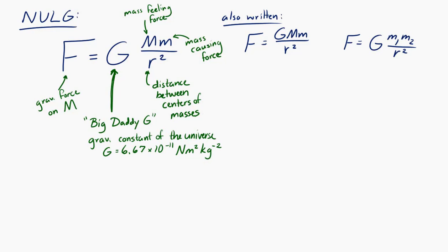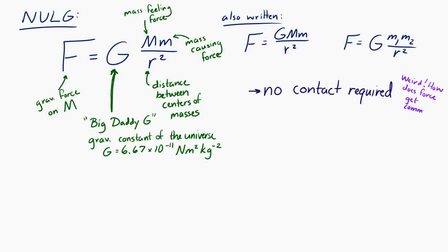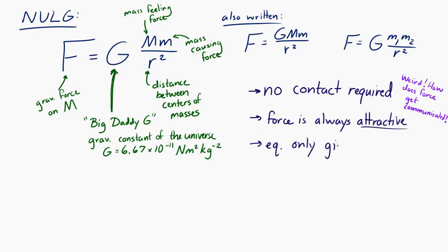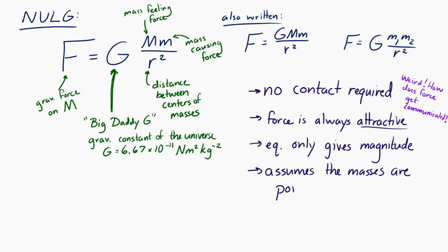One strange thing about Newton's law of universal gravitation is there's no contact required for a gravitational force to occur. Two things that don't touch can still have a force between them — so how does the force get communicated? The force is always attractive; keep that in mind. This equation only tells you the magnitude of the force — direction comes from the fact that the force is always attractive. It also assumes the objects are point masses.